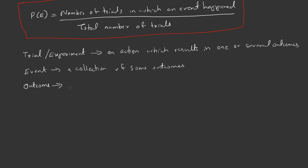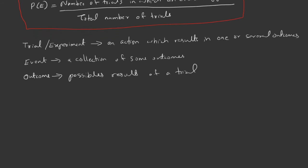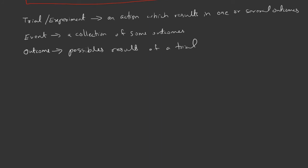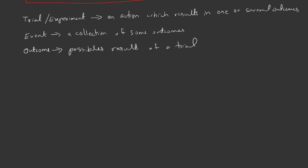The last term is outcome. It is simply the possible results of a trial. We will study exact definitions of these terms in probability topics of other classes.